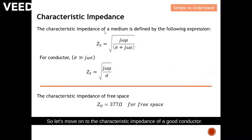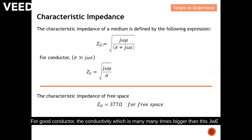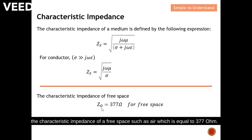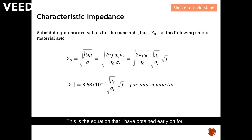Let's move on to the characteristic impedance of a good conductor. For a good conductor, the conductivity is many many times bigger than j-omega times the dielectric constant, and hence we obtain the characteristic impedance equation shown here. Before continuing, I'd like to bring your attention to the characteristic impedance of free space — for free space such as air, this is equal to 377 ohms, which is a constant.